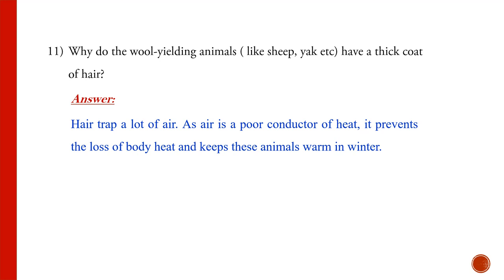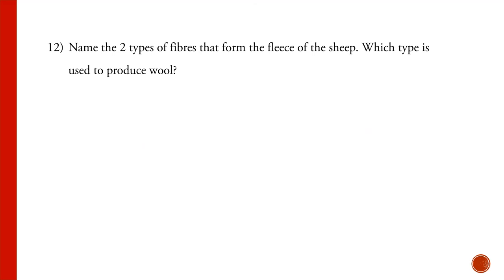The process of taking out threads from the cocoon to be used as silk is called reeling. Wool-yielding animals like sheep and yak have a thick coat of hair because the hair traps a lot of air. Air is a poor conductor of heat, so the heat from the animal's body does not escape, keeping the animal warm.